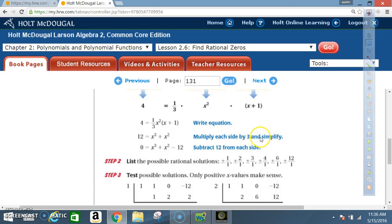We're going to multiply each side by 3 to get rid of the one third. After doing so, the one third is gone. It's like multiplying by 3 over 1. And then 3 over 1 times 4 is 12. So now we got 12 is equal to x cubed plus x squared. We're going to subtract 12 from each side. Now we got x cubed plus x squared minus 12.